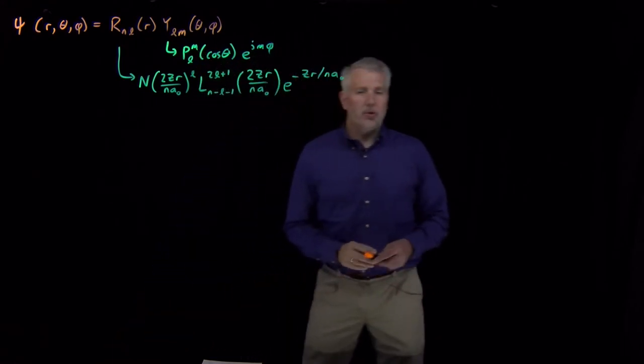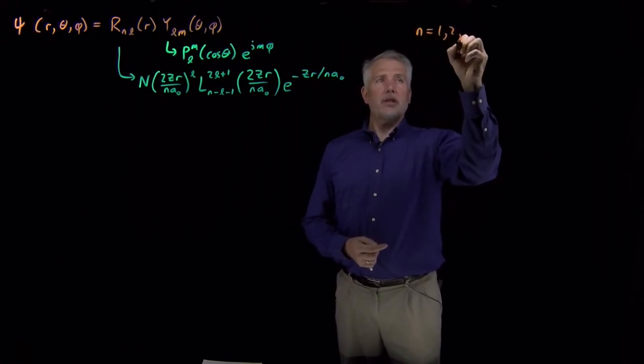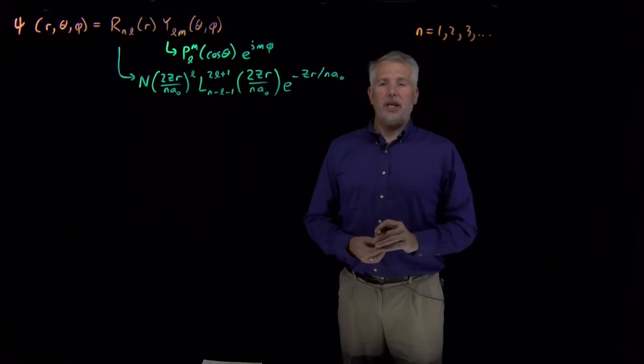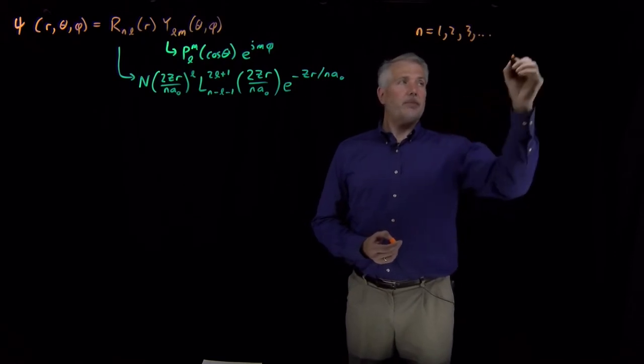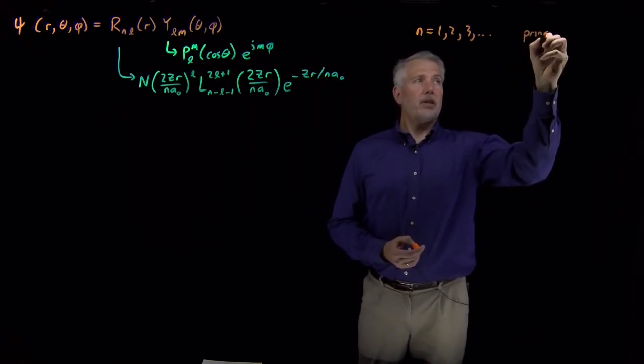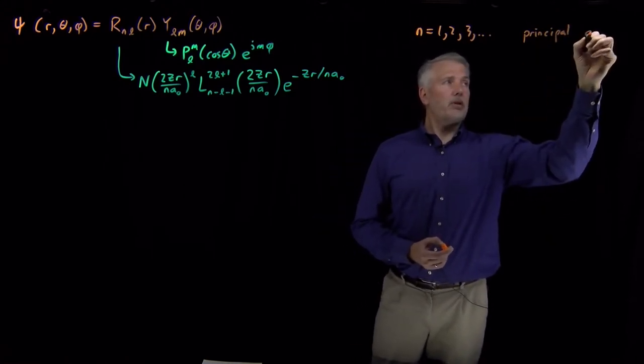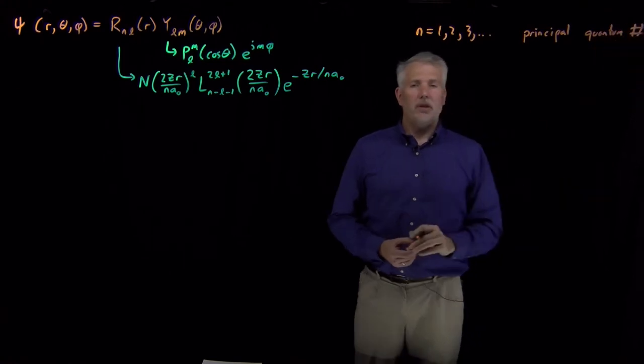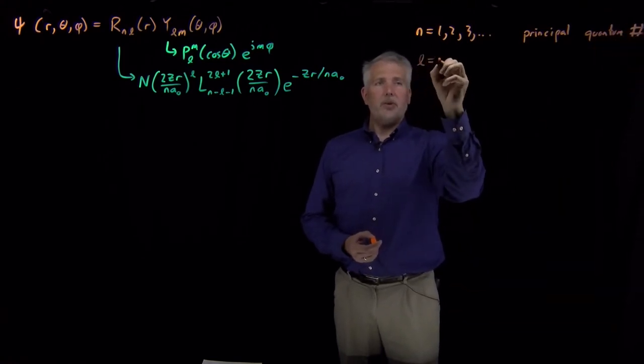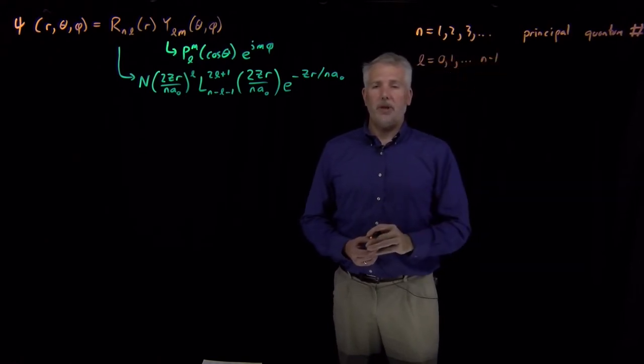So let's summarize real quickly what we know about those quantum numbers. Again, the value of n can be any positive integer—one, two, three, and so on. The name for that quantity is the principal quantum number. The value of l we've seen can run from 0 up to n minus 1, but cannot be larger than that. That one is called the angular momentum quantum number.